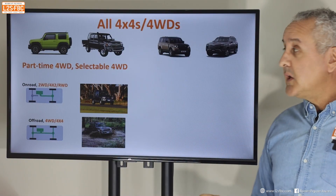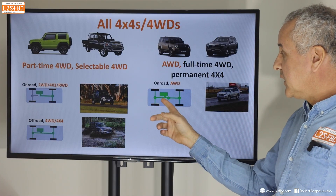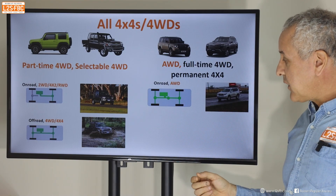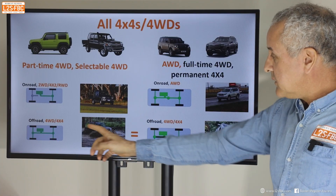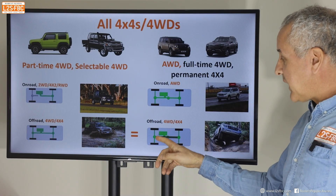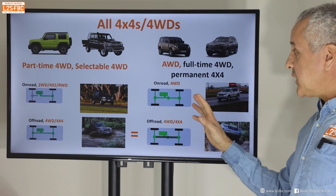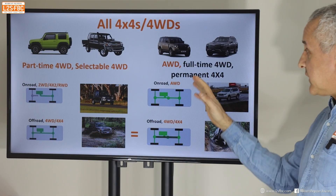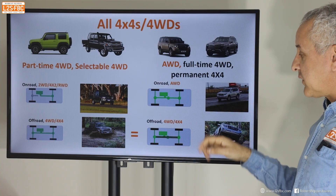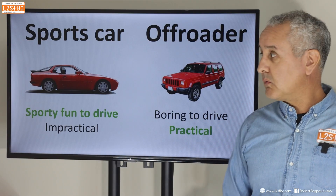Part-time or selectable four-wheel drive is the name typically assigned to those vehicles. Then we have AWD or full-time four-wheel drive — also called permanent four-wheel drive. These can run in AWD mode on road, and off-road they still run AWD but typically do something called locking the center diff, which makes that mode equivalent and allows the front axle to always spin at the same rate as the rear axle, giving better traction off-road.